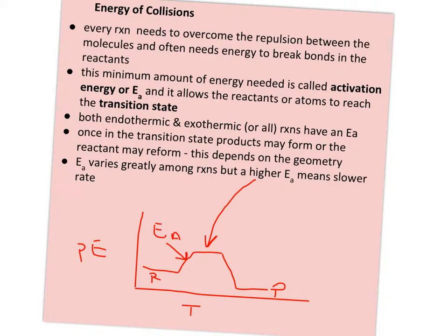Looking a little more at the energy of the collision, why is there a minimum amount of energy? Well, every reaction needs to overcome the repulsion between the molecules and it needs energy to break the bonds in the reactants quite often. So that minimum amount of energy is what we call activation energy or E sub A.